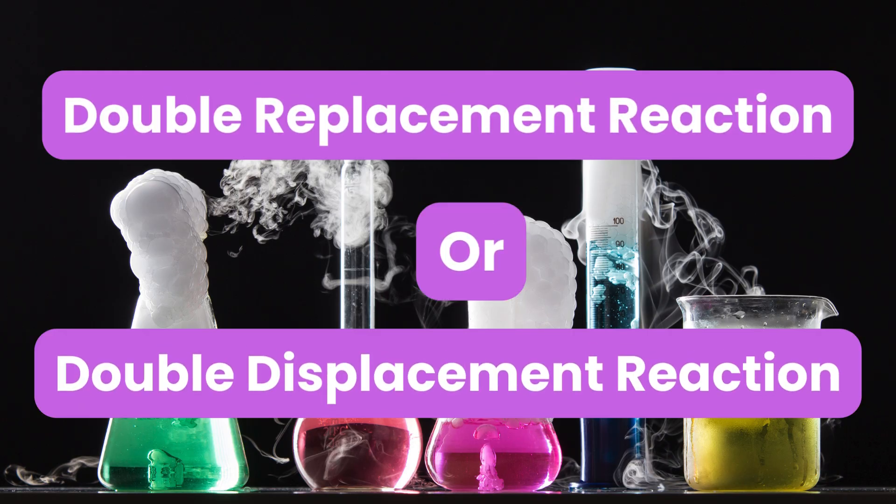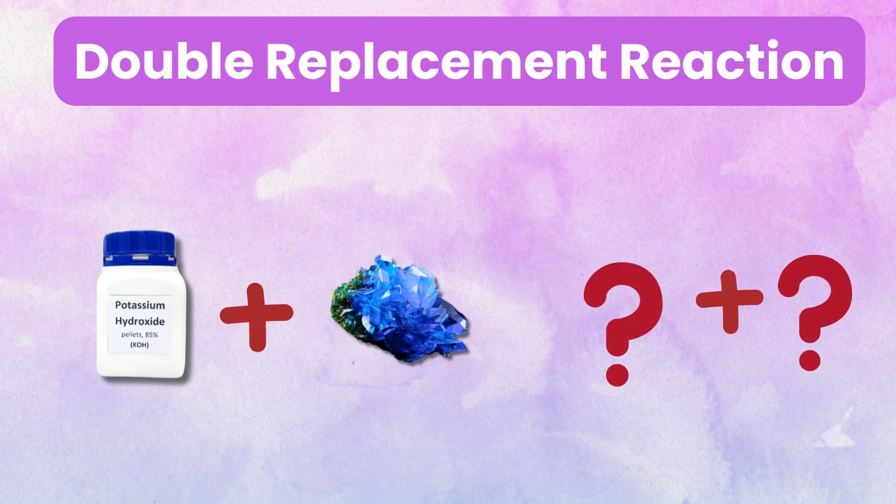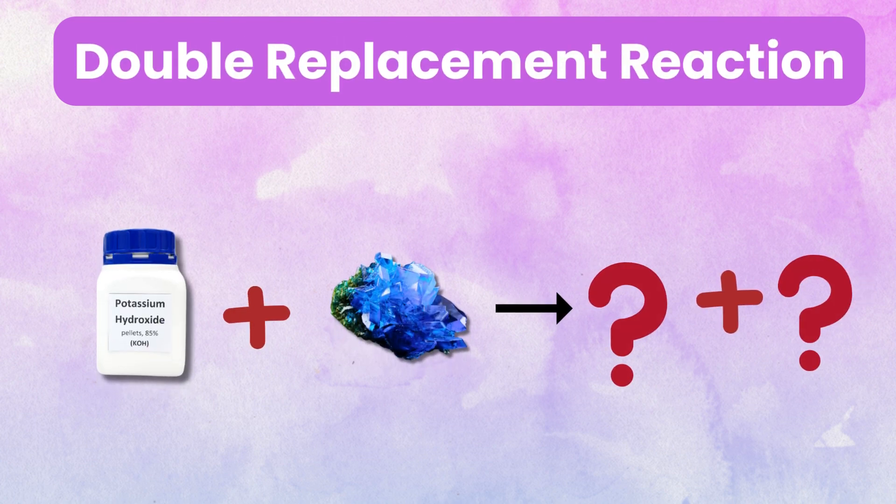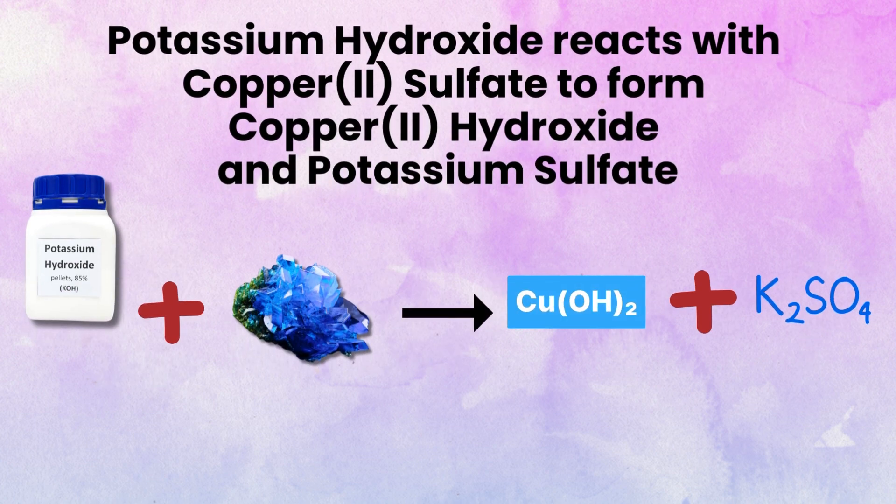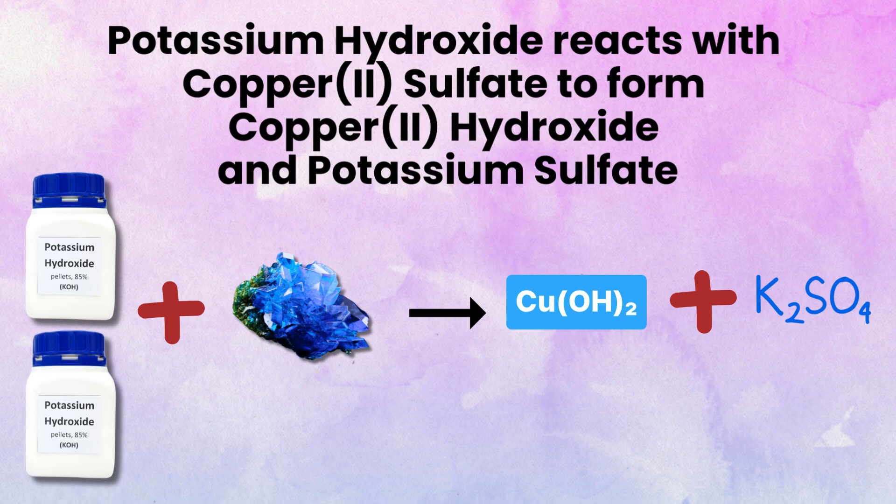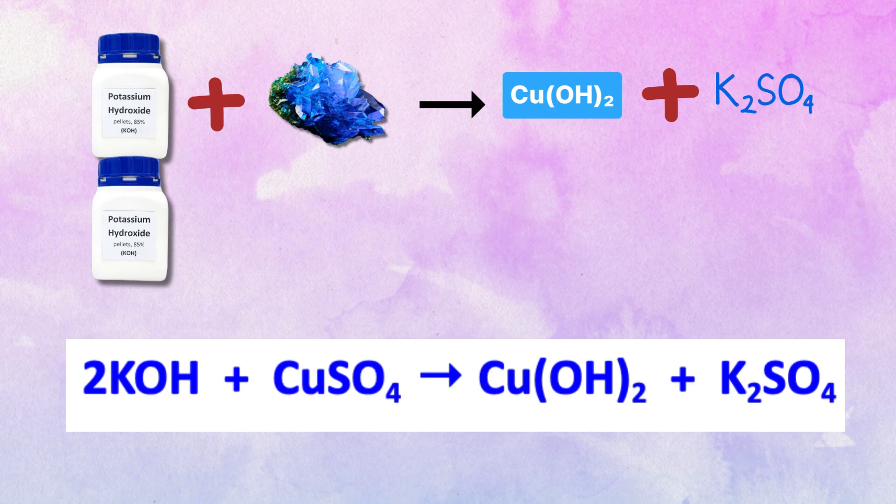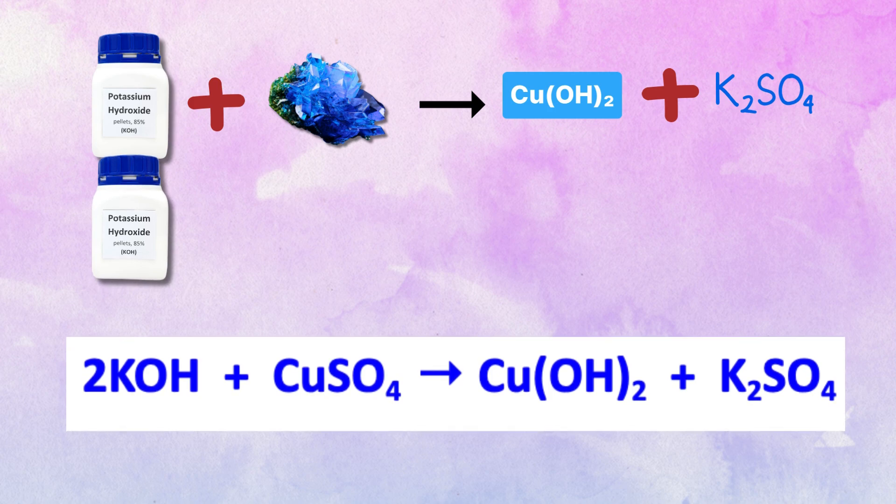Double replacement reaction. Let us understand double replacement reaction with an example. Potassium hydroxide reacts with copper 2 sulfate to form copper 2 hydroxide and potassium sulfate. 2KOH plus CuSO4 gives CuOH2 plus K2SO4.